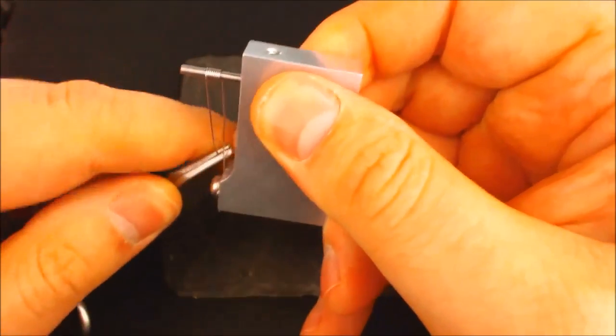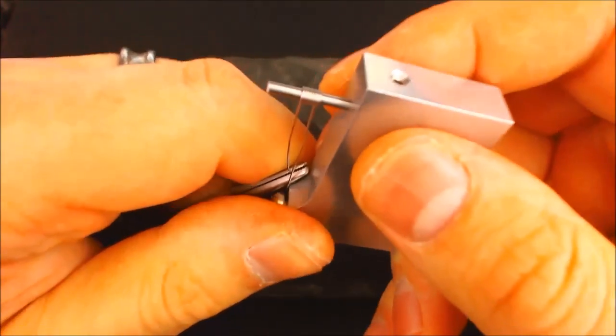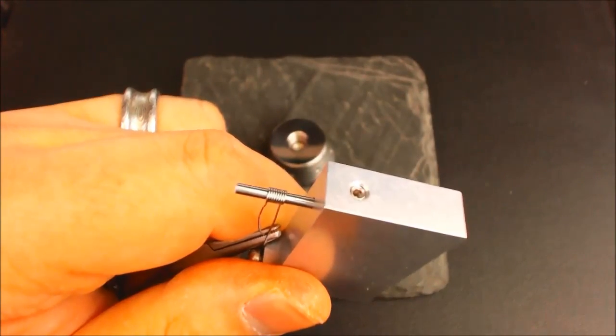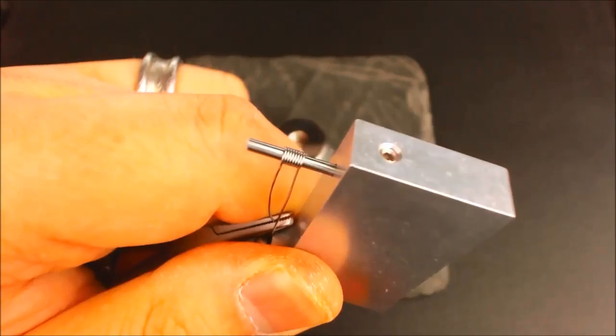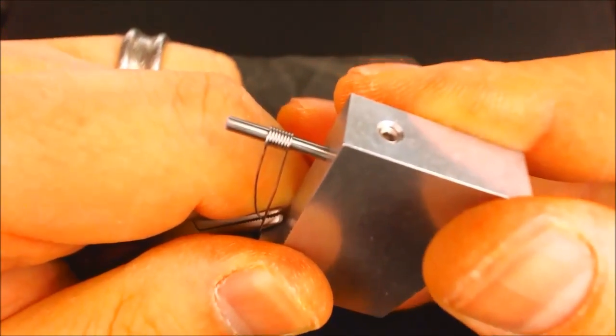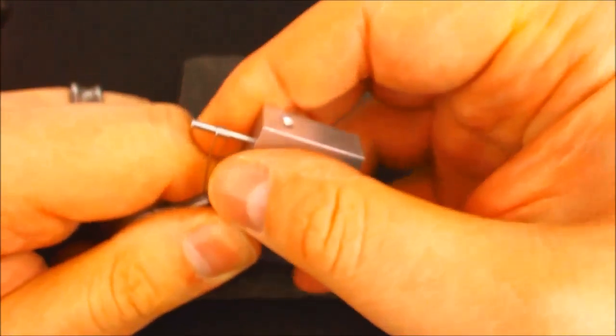That should be good. As you can see, all the wraps are nice and close here. Let me adjust my focus. It really makes this a very simple process to get nice consistent coils.